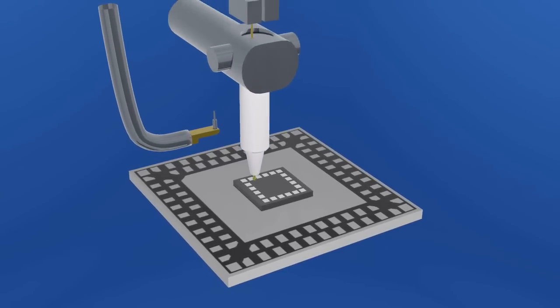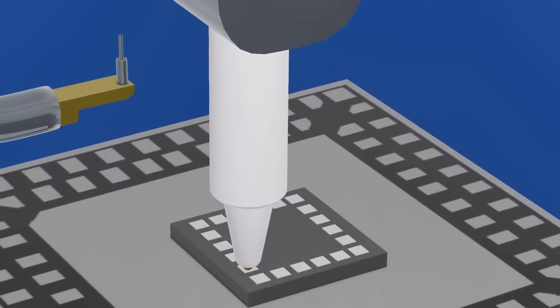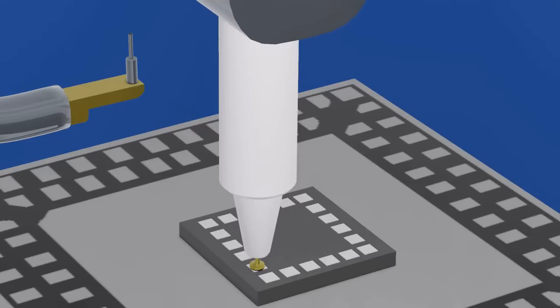The tool is then quickly placed over the bond pad of interest and pressed down onto the bond pad and supplied with ultrasonic energy. This process creates a metallurgical contact between the wire and the bond pad.